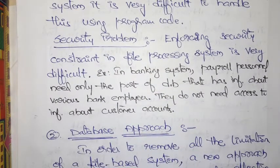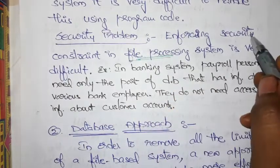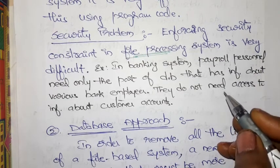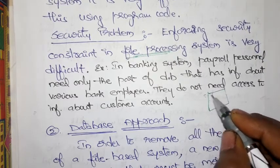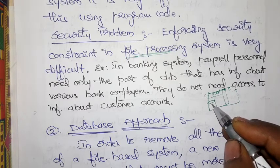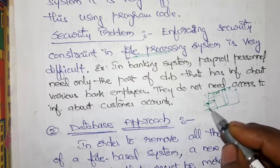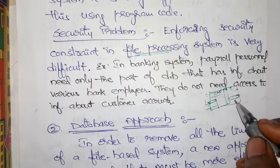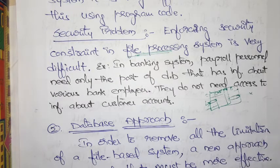The next problem is the security problem. Enforcing security constraints in a file processing system is very difficult. For example, in a banking system, payroll personnel need only the part of the database that has information about bank employees — they should not access customer accounts. Each customer should be able to see only their own details; if other customers' information is also visible, security is not being maintained.